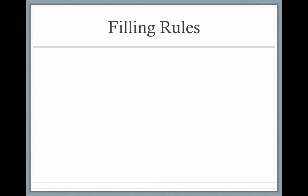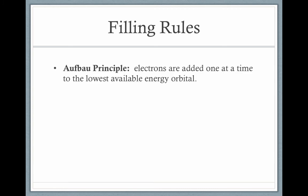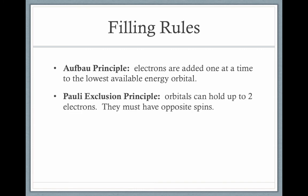There are some rules that govern the way electrons occupy energy levels in an atom. The first is the Aufbau principle — Aufbau is German for 'building up' — which tells us that electrons are added one at a time to the lowest available energy orbital first. You won't fill a higher orbital until lower orbitals are completely full. Then we have the Pauli exclusion principle, which tells us orbitals can hold up to two electrons and they must have opposite spins, represented by arrows pointing in opposite directions.